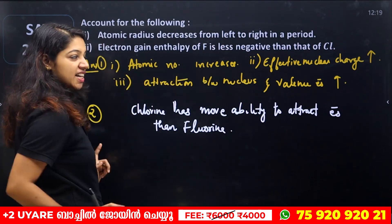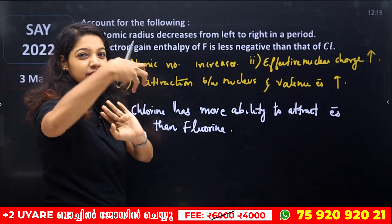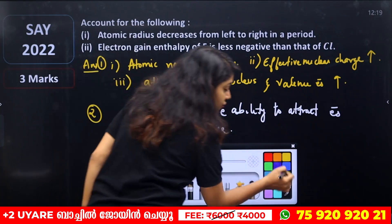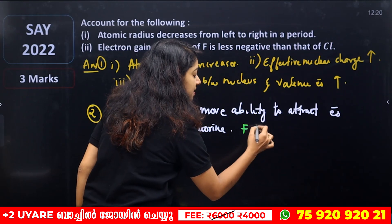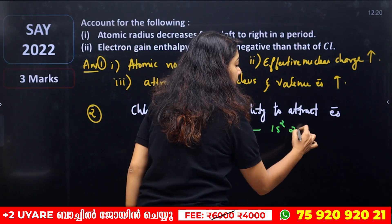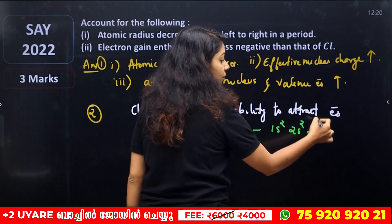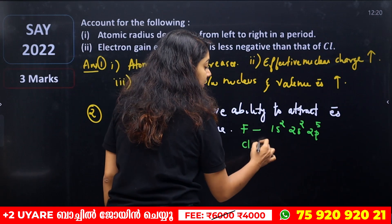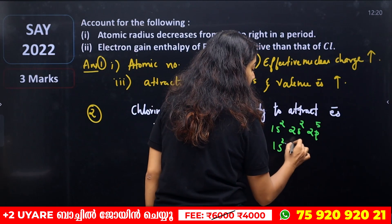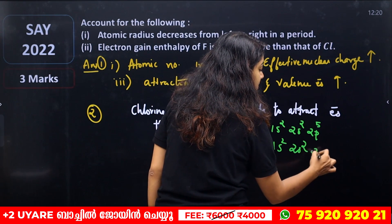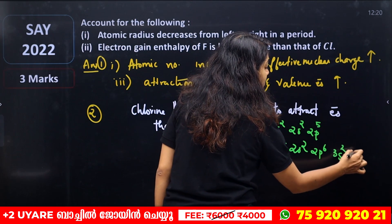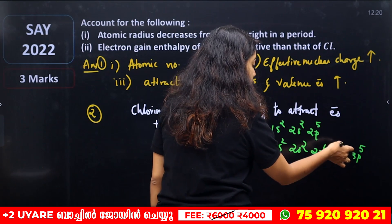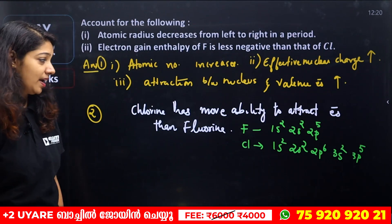To explain this, we use electronic configurations. Fluorine's electronic configuration is 1s², 2s², 2p⁵ — atomic number 9. Chlorine's atomic number is 17, with electronic configuration 1s², 2s², 2p⁶, 3s², 3p⁵ — confirming atomic number 17.